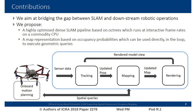We also employ a map representation based on occupancy probabilities, which can be used directly in the loop to execute geometric queries, typical for example of motion planning algorithms. In the figure is shown the high-level structure of our system, which consists of a three-stage pipeline.